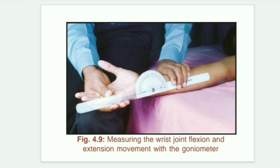The movable arm must be along the longitudinal axis of the fifth metacarpal — that is your wrist flexion. For wrist extension, the same procedure applies but the range is 0 to 70 degrees.